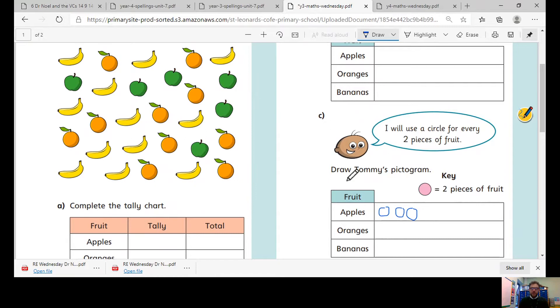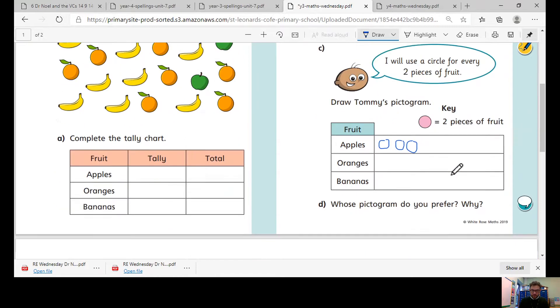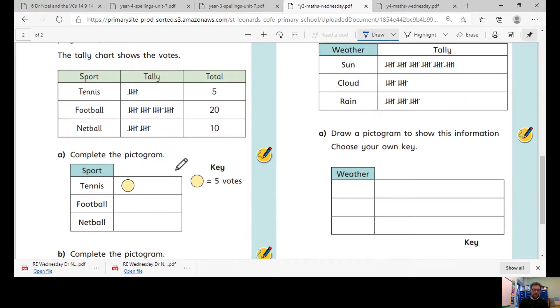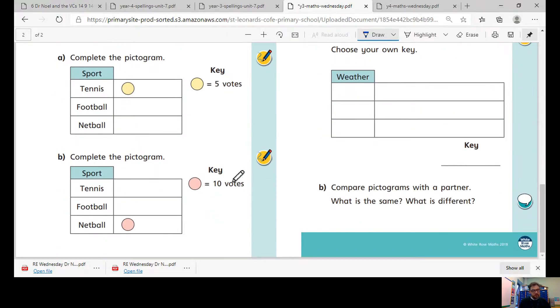Off we go on that one. Question two, again it's using our tally charts to help make sure we've got that correct. It says complete the pictogram using this data. So this time our circle represents five, so be careful with how many you have to draw in to represent how many chose football and how many chose netball. And again, this time our votes are 10 per circle.